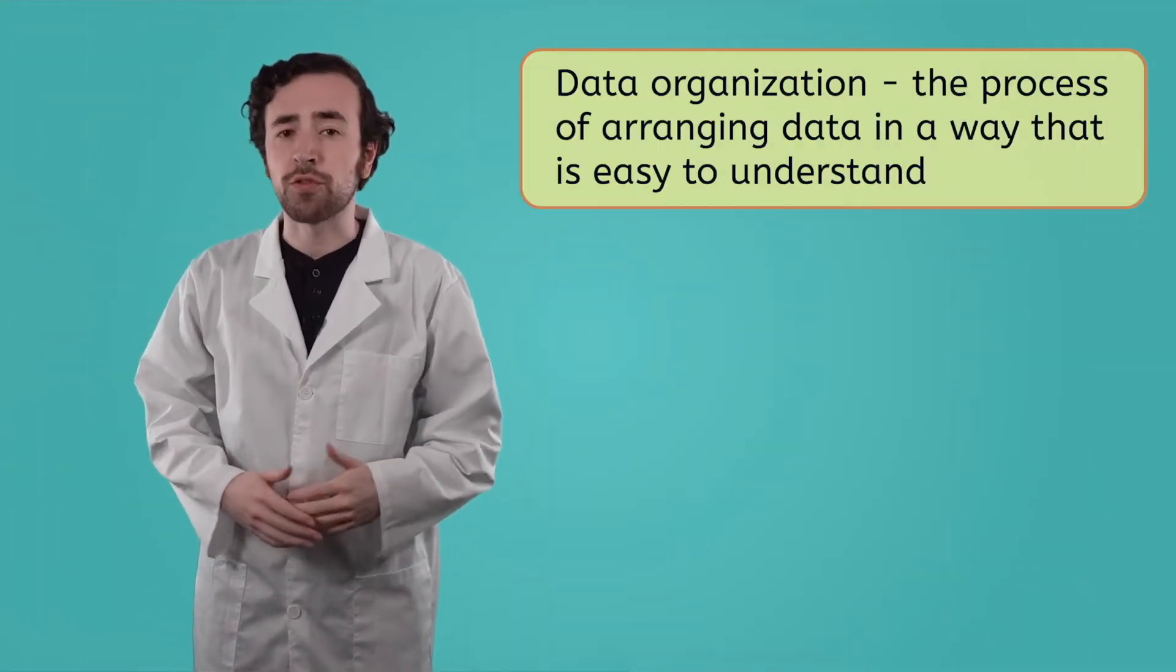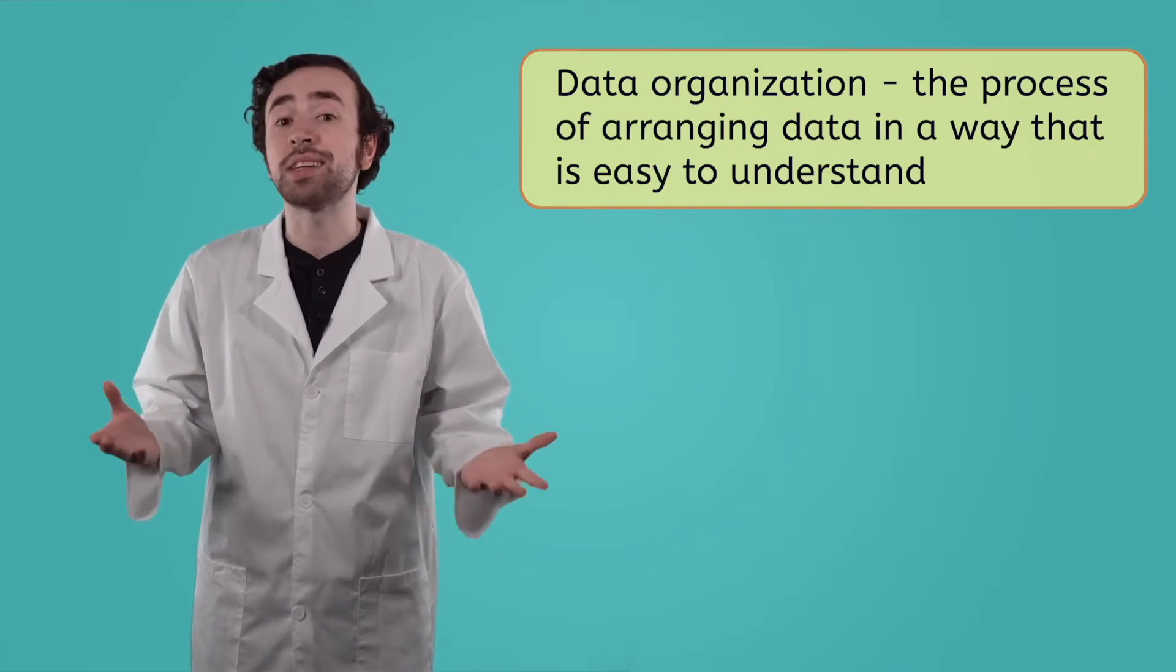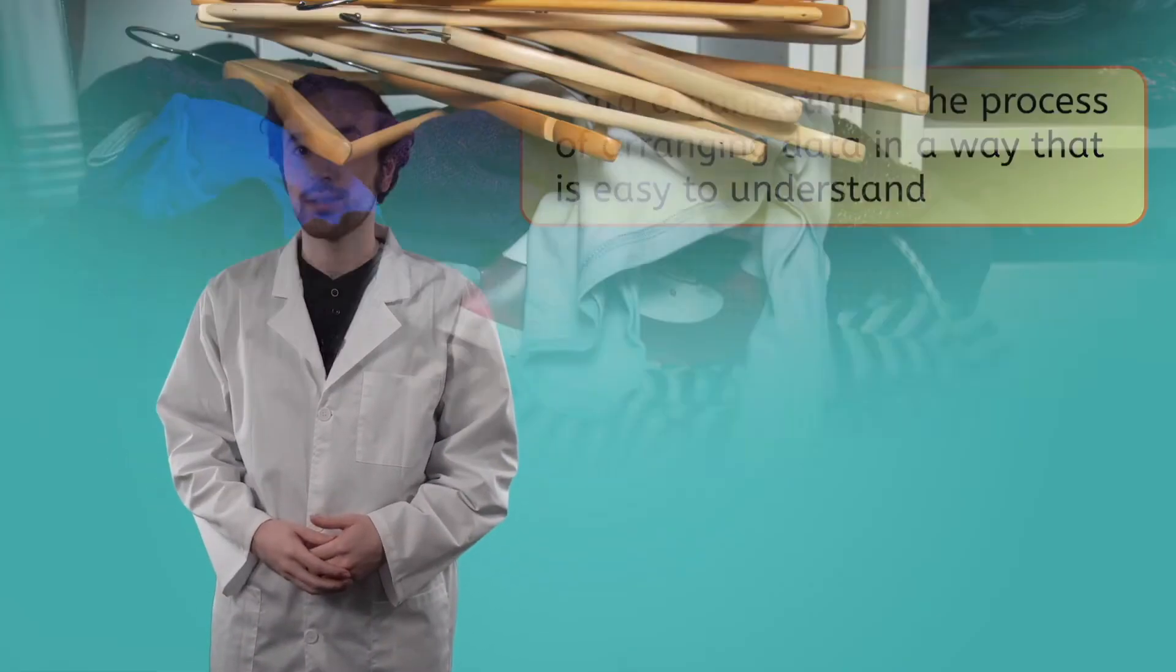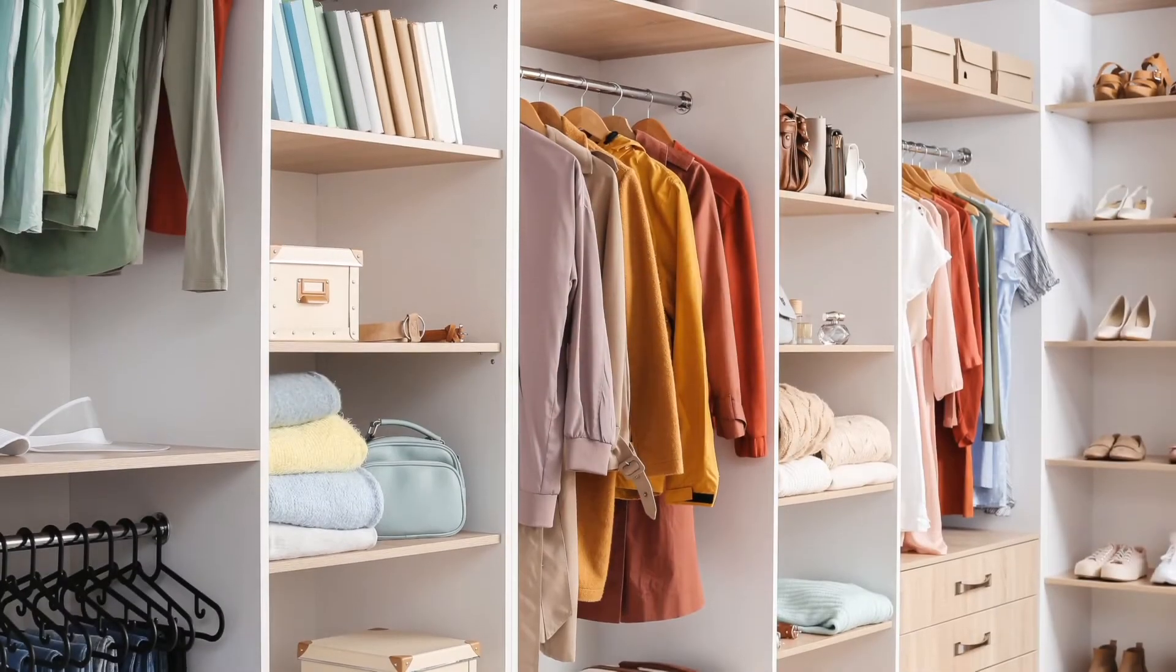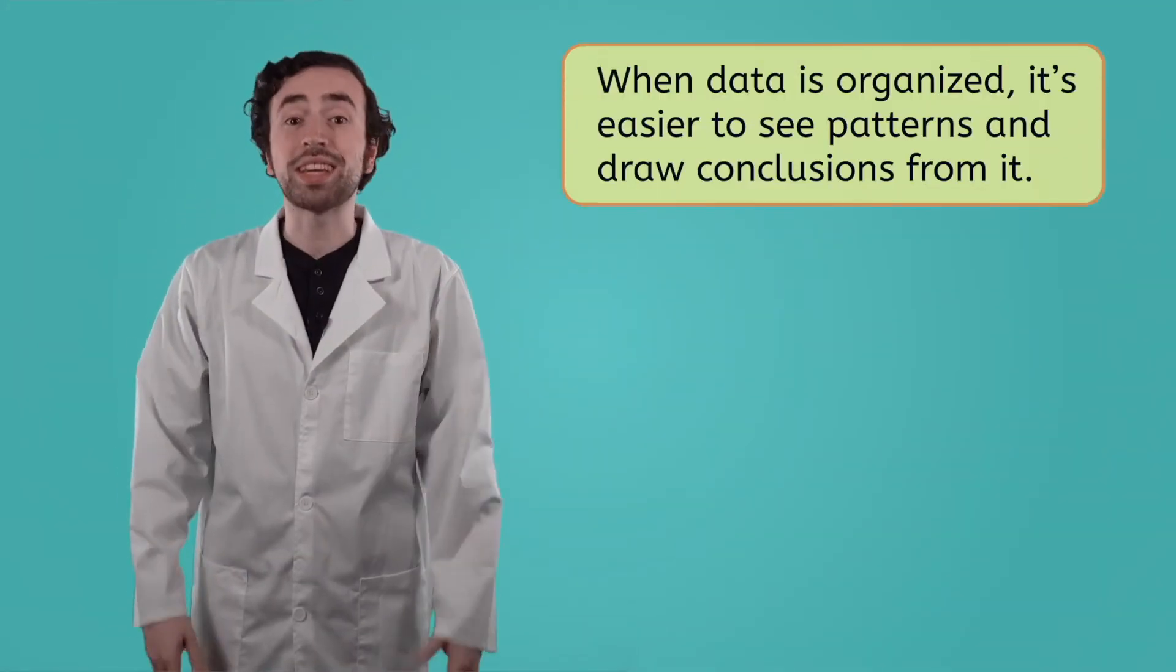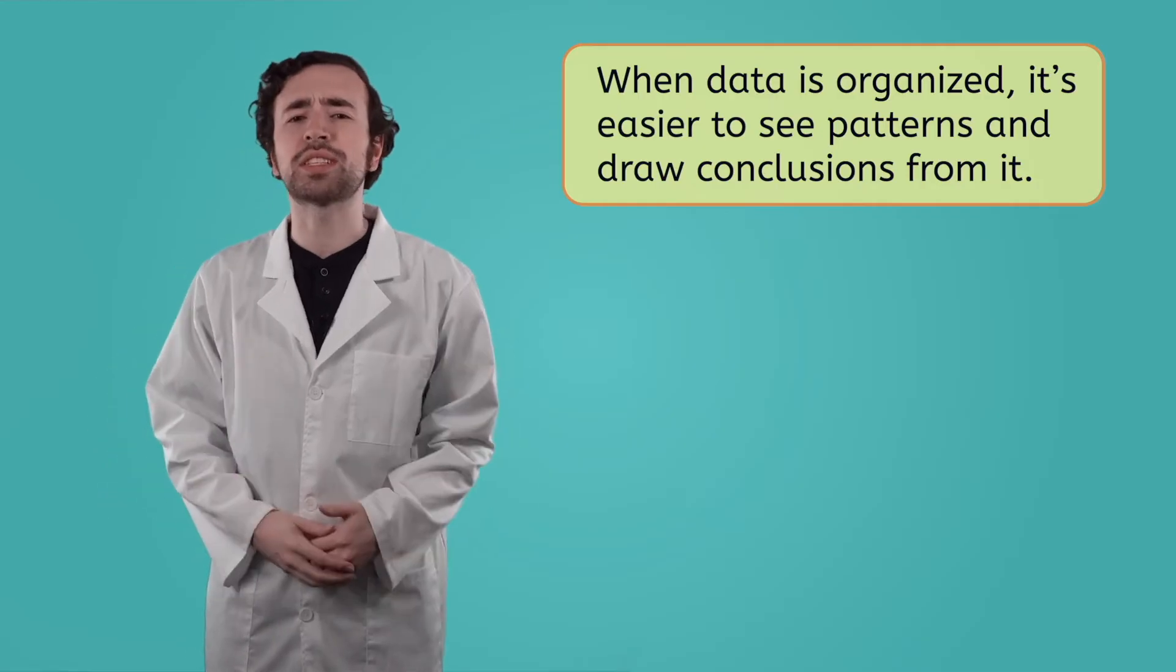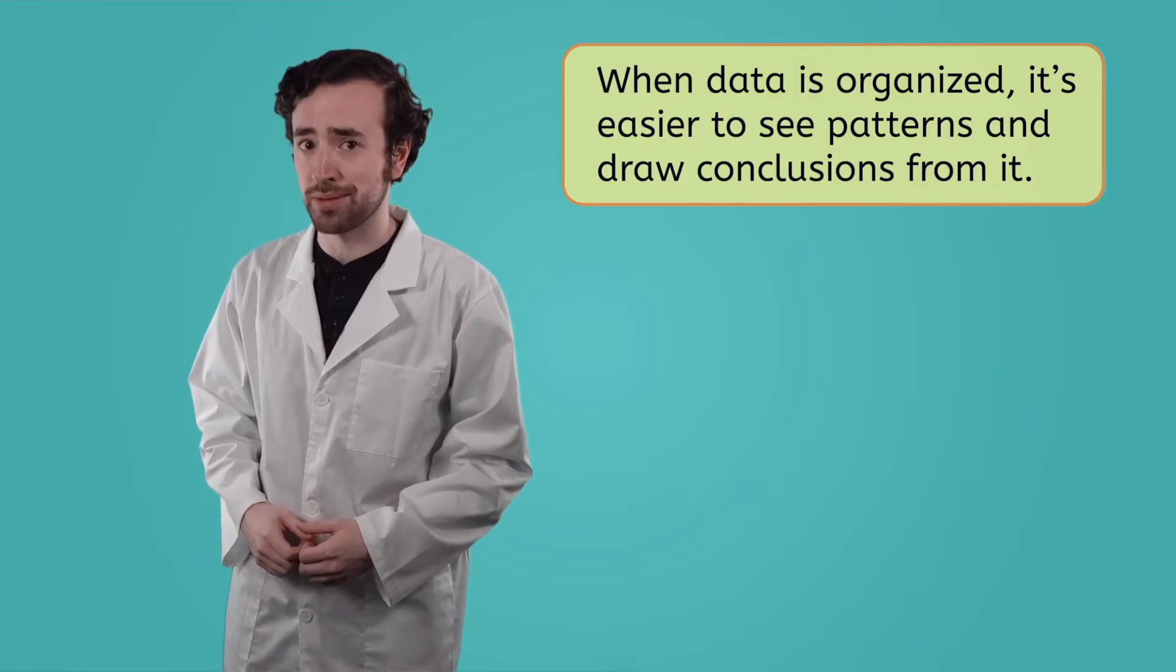Data organization refers to the process of arranging data in a way that makes sense and is easy to understand. Think of it like organizing a messy closet. When everything has a place and is neat and tidy, it's easier to find what you need. Similarly, when data is organized, it's easier to see patterns and draw conclusions from it. That's where journals and tables come in.